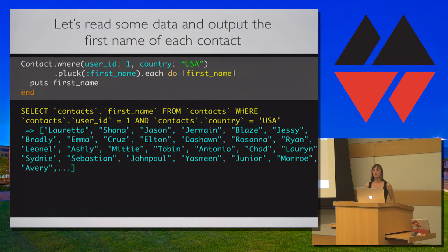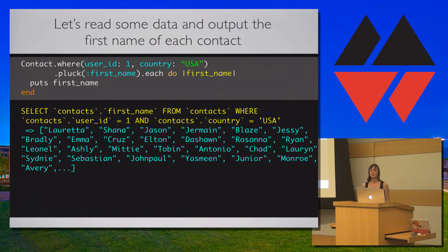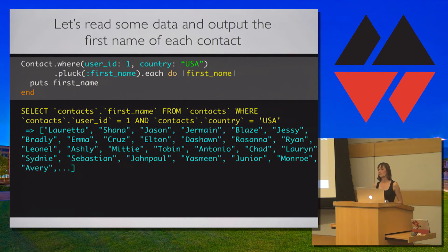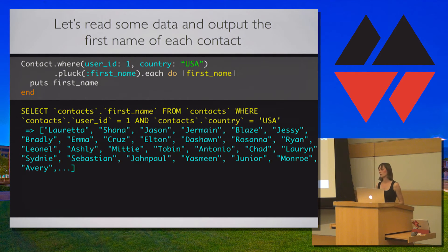Since we are only outputting the first name, we can use pluck to get just that attribute. Pluck will be much faster because it creates an array of strings instead of returning full ActiveRecord objects. We will only have the first name attribute, not the rest of the record.